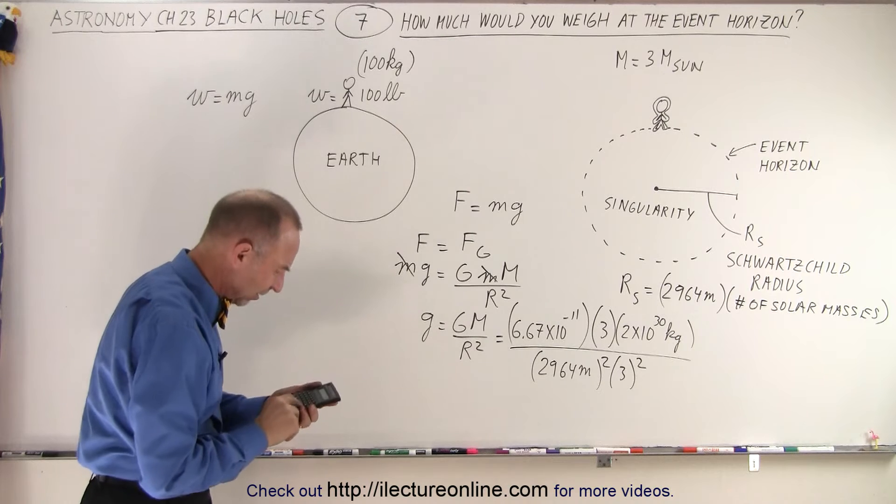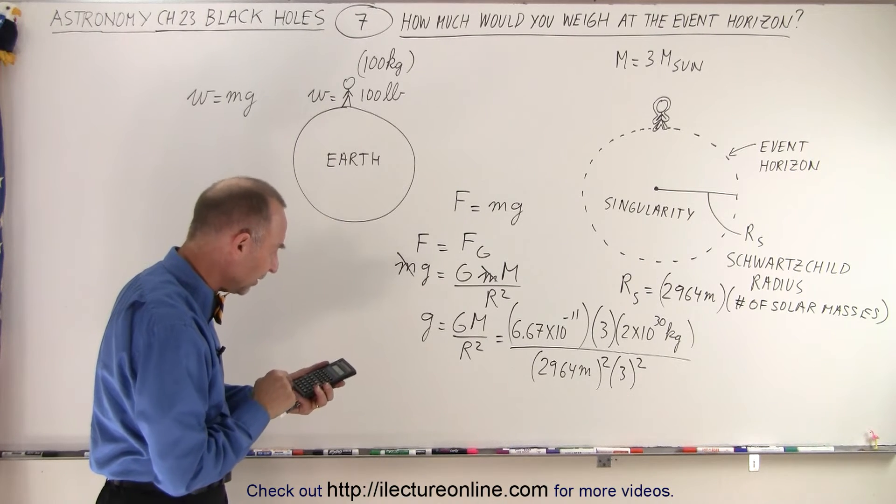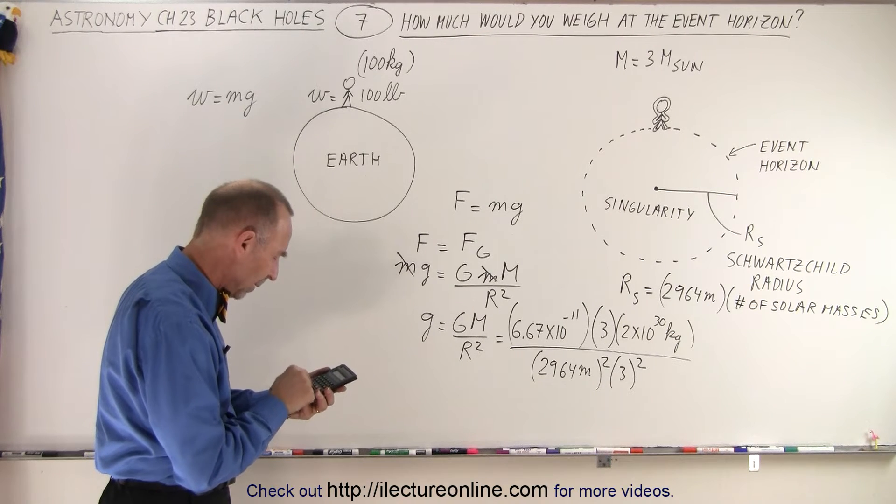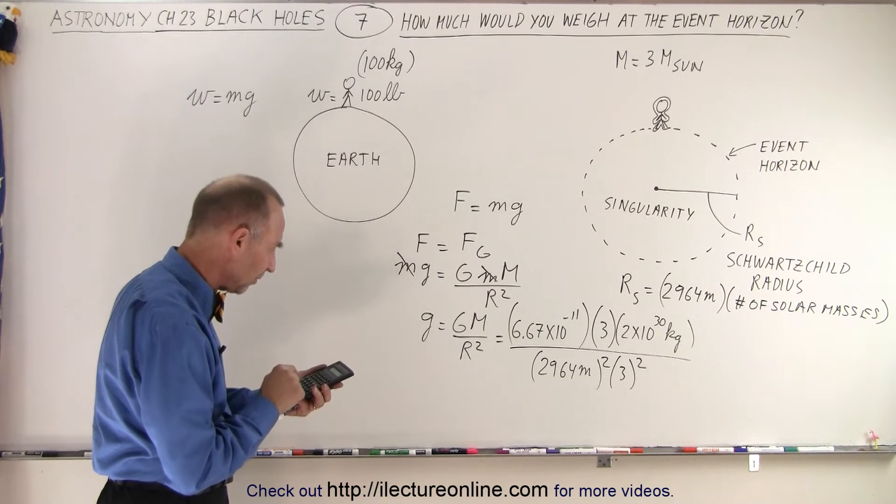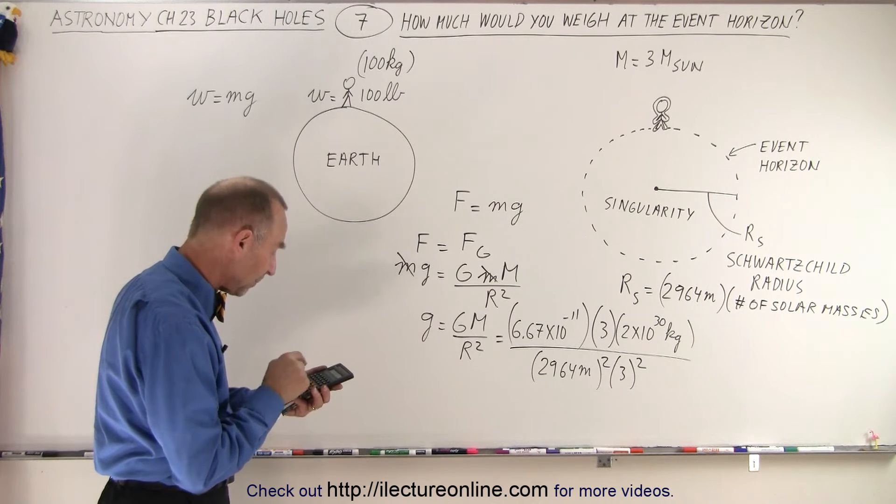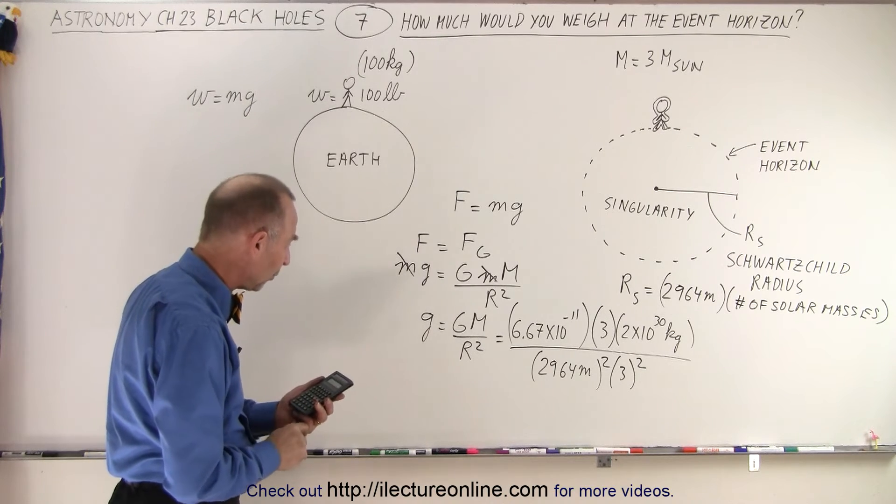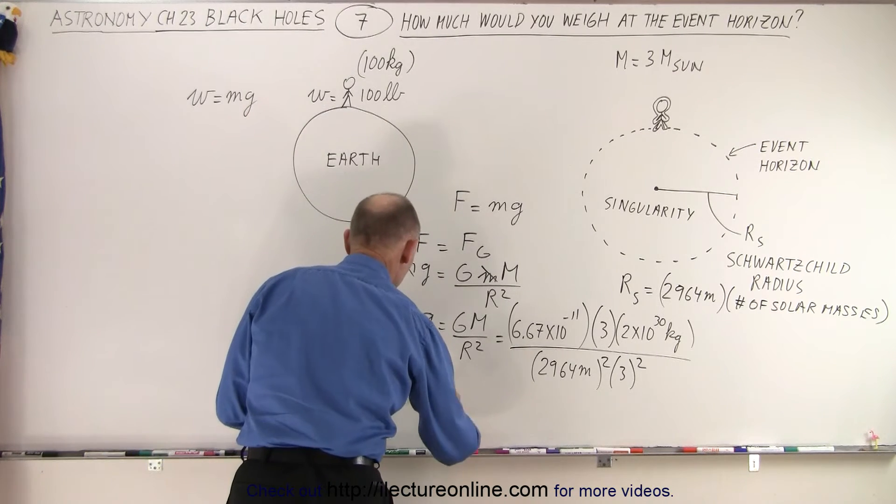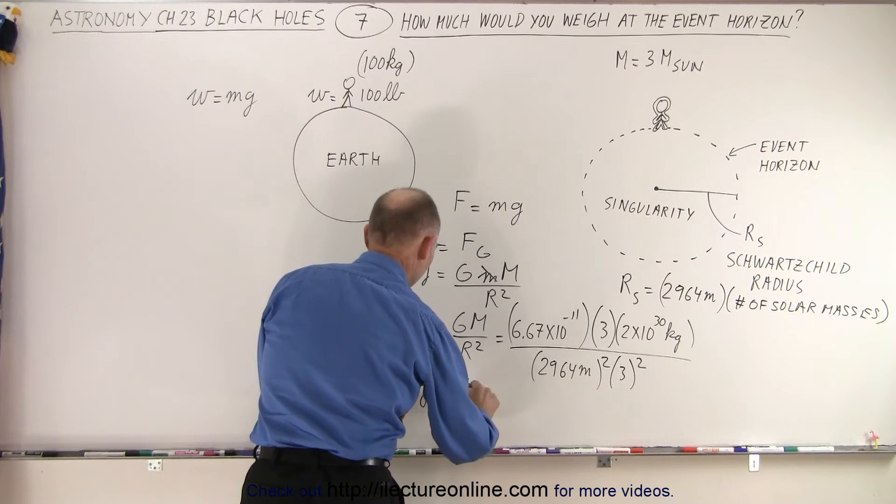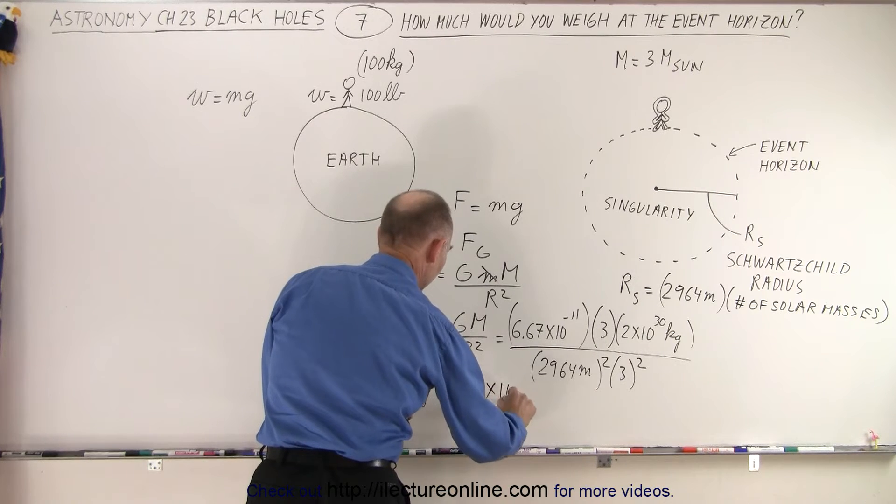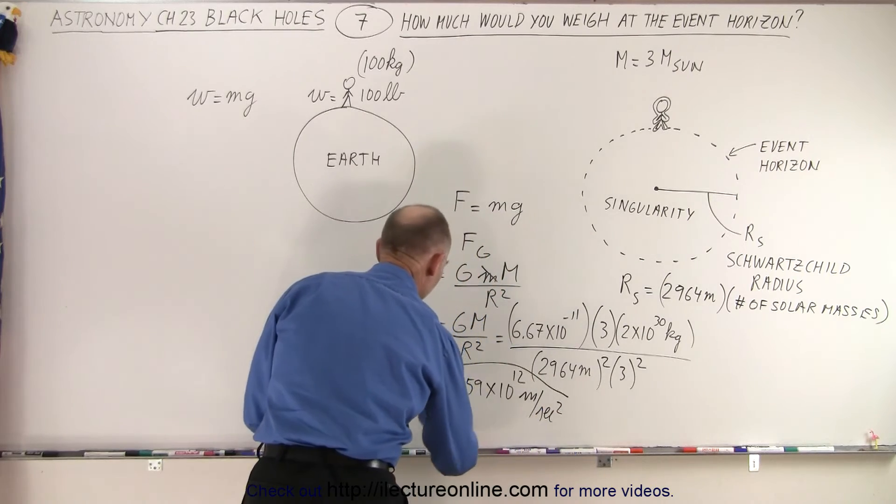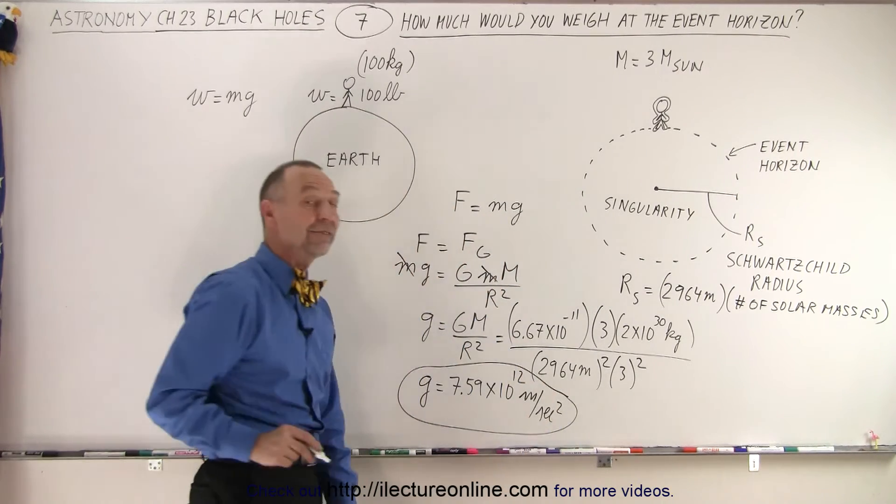All right, so first let's calculate this. So 6.67 e to the minus 11 times 3 times 2 e to the 30th, divided by 2964 squared, and divided by 3 squared, which is 9, and we get, wow, g is equal to 7.59 times 10 to the 12th, and of course that would be meters per second squared. So that's acceleration due to gravity at the event horizon.